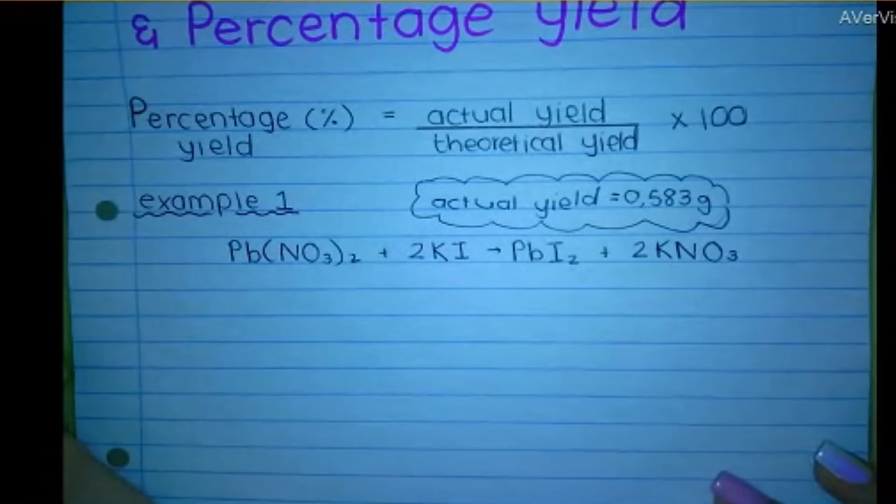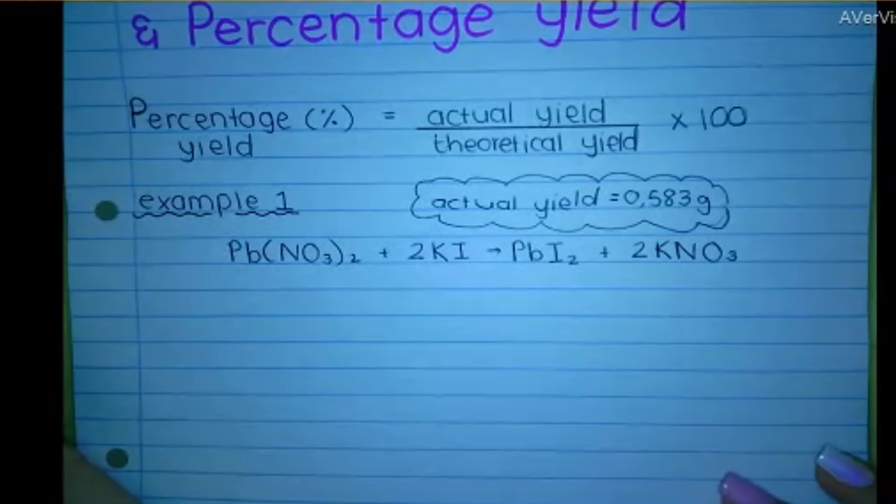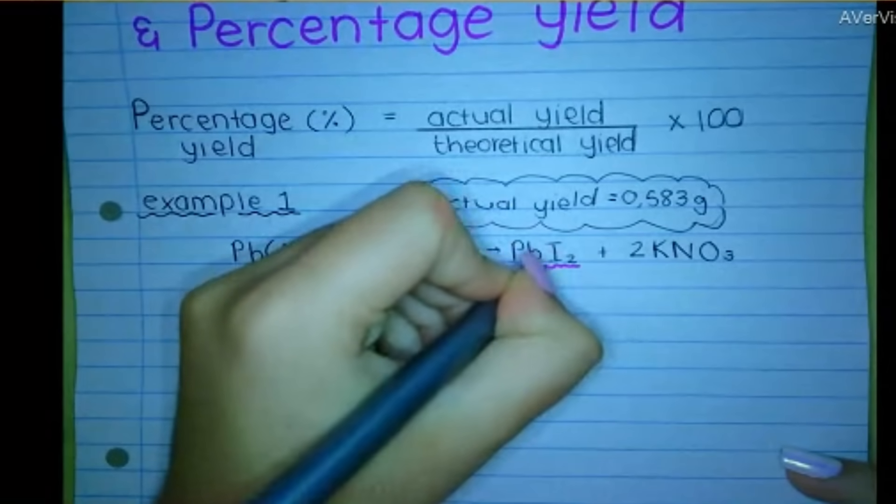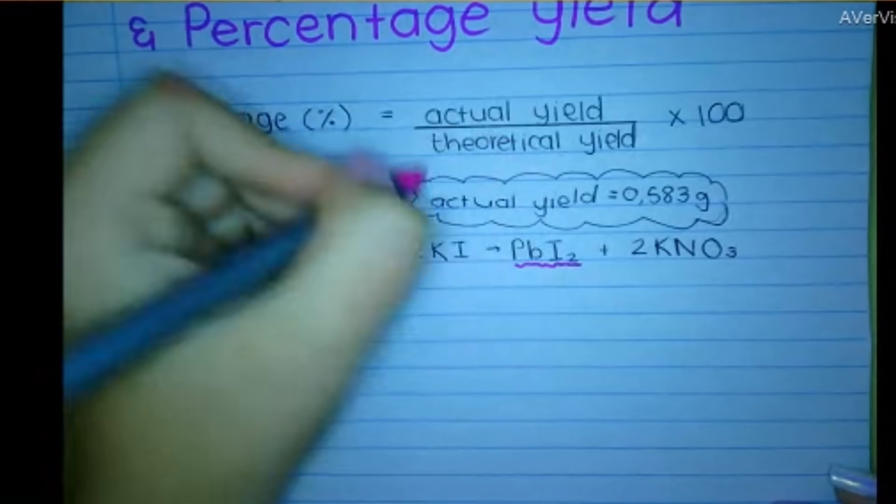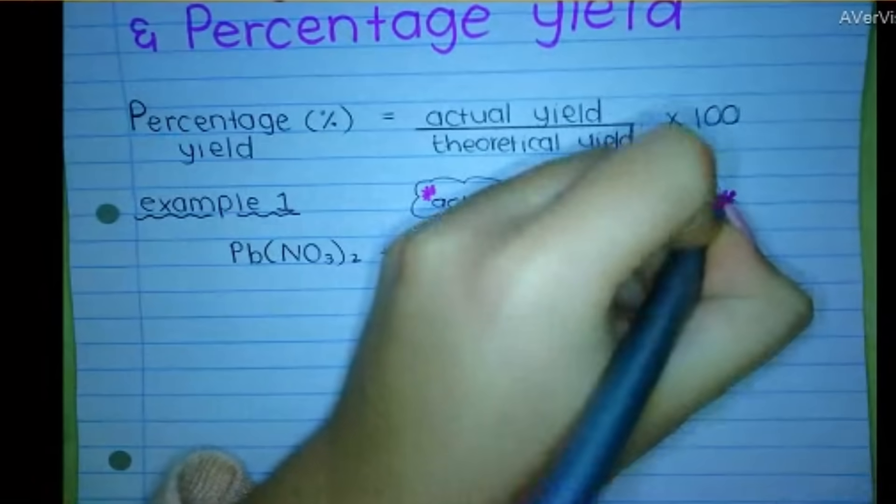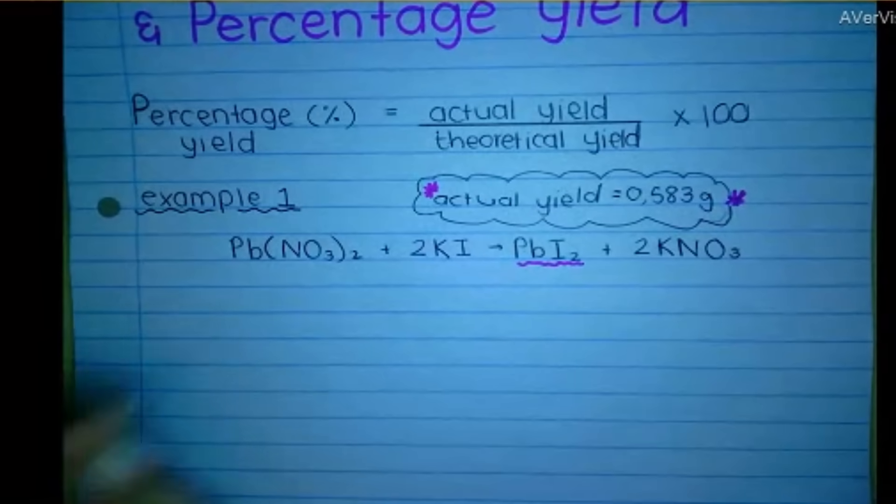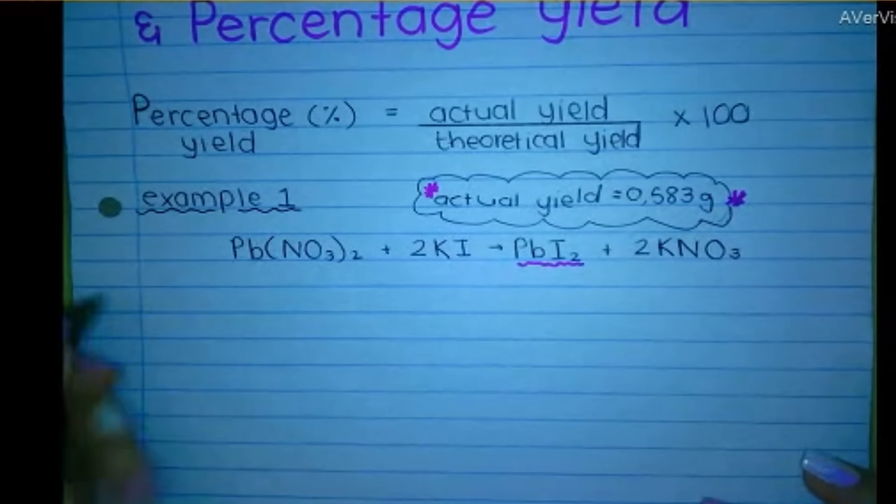Now remember what I told you, theoretical yield is what the chemistry says should happen. How much product I should obtain. So we're looking specifically at this product. Okay, I'm just underlining. So the actual yield of that product is this. Now we're going to find the theoretical yield. So basically theoretical yield is just found by doing chemistry as per usual.